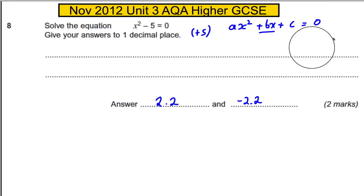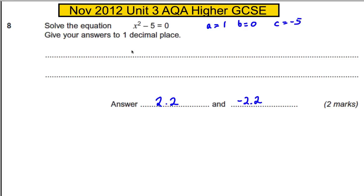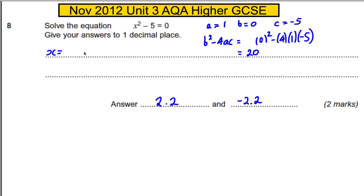Lastly, using the quadratic formula: a = 1, b = 0, c = −5. We calculate b² − 4ac = 0² − 4(1)(−5) = 20. Substituting into the formula gives (−0 ± √20) / 2, which is ±√20 / 2. These also give √5 and −√5, and hence when decimalized give the same answers of 2.2 and −2.2. So we're done.